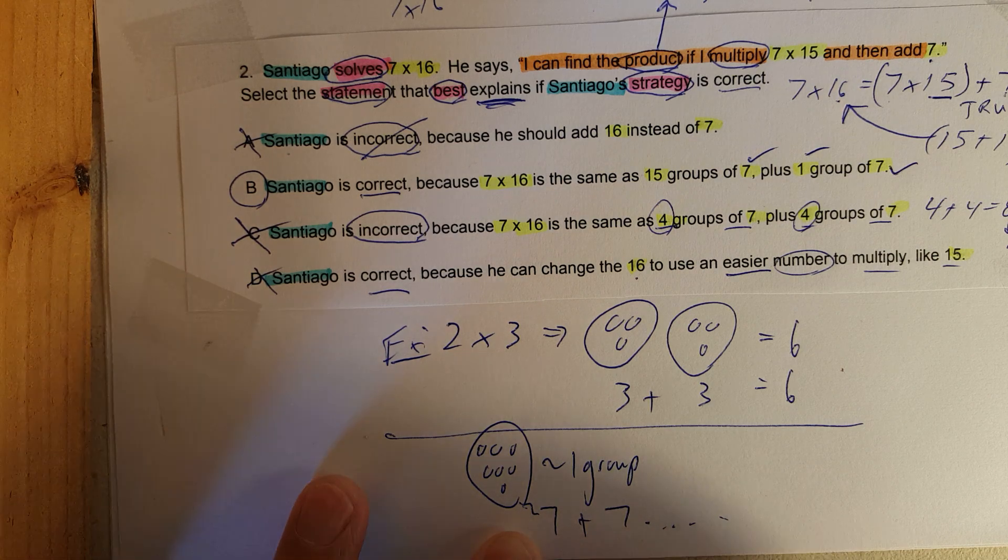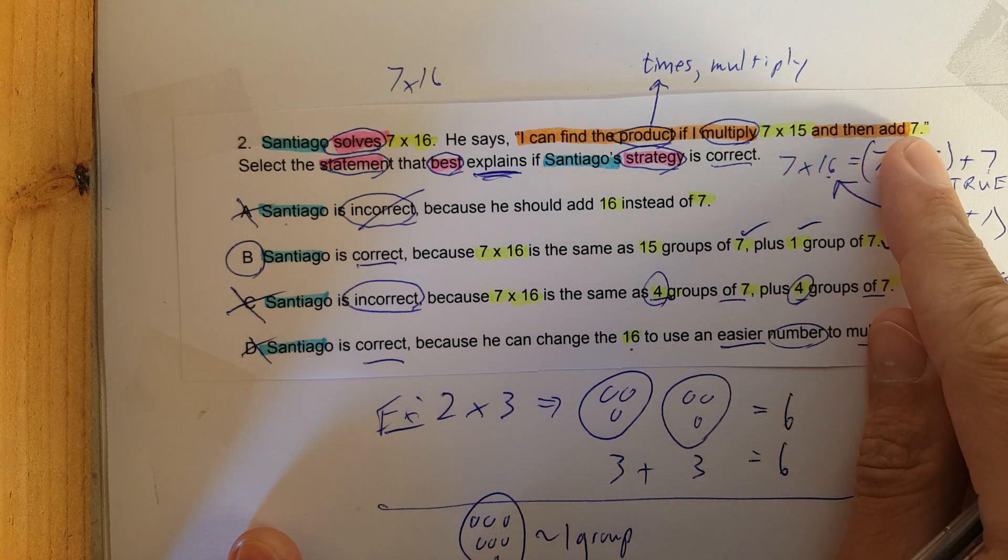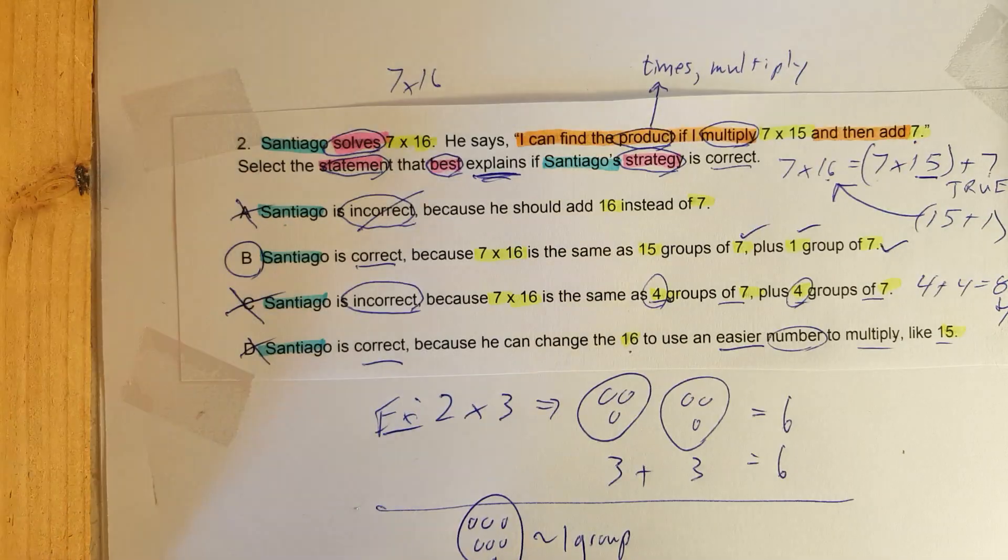Since we're in 4th grade, we multiply, and we know now that 7 times 16 is the same thing as 15 groups plus another group. Hope that helps, have a good one, bye!